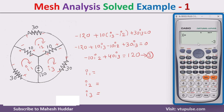Finally we get the answers: I1 is −3, I2 is 0, and I3 is 3. I hope the concept of mesh analysis is clear. If you like the video, do like and share with your friends. Press the subscribe button for more videos and the bell icon for regular updates.